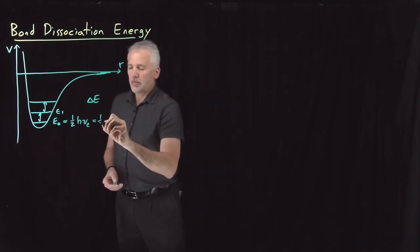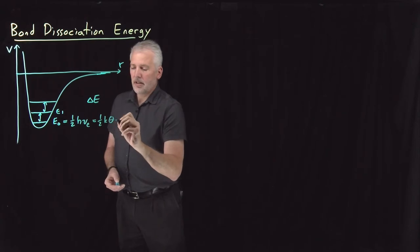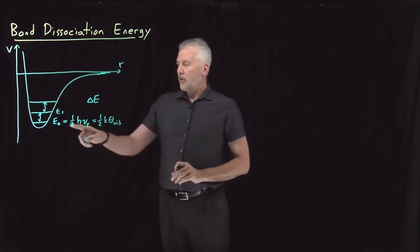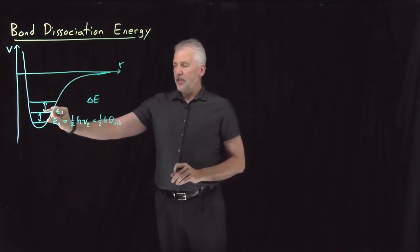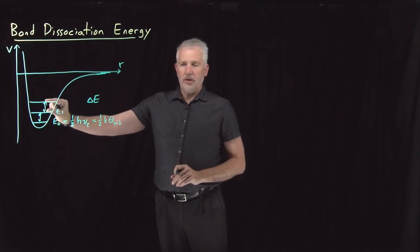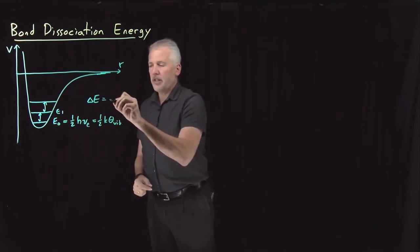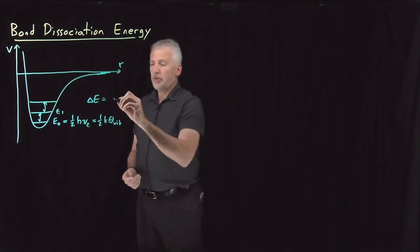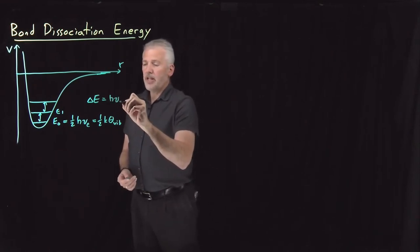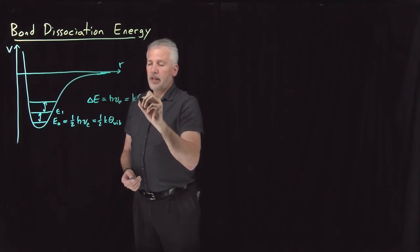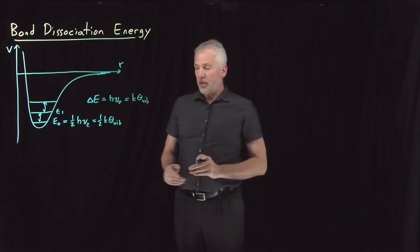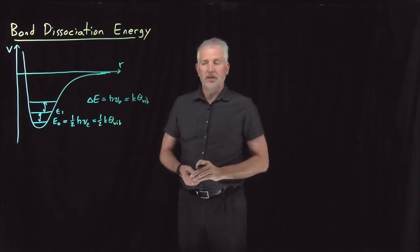Sometimes it's more convenient to think of that as Boltzmann's constant times the vibrational temperature of the molecule. Likewise, the gaps between these states, E0 to E1 or E1 to E2, that difference in energy falls in the infrared portion of the electromagnetic spectrum for a diatomic molecule. That difference is H nu or K theta. If it's anharmonic, then these terms all have some corrections tacked onto them.